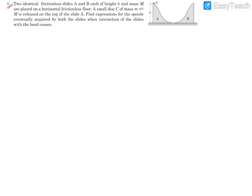Hello, this is question number six. We have two identical frictionless slides A and B. So this is slide A somewhere in this place, and this is B, identical one. They each have a mass M and height h.